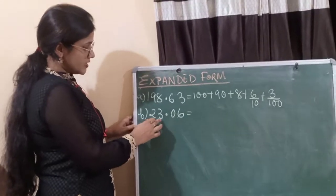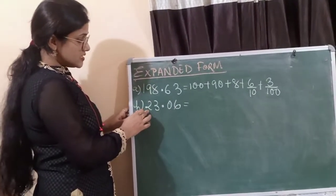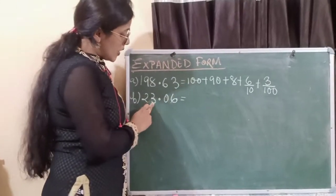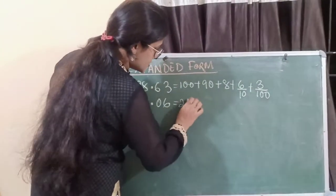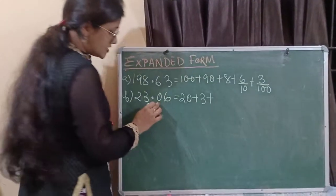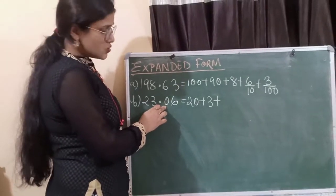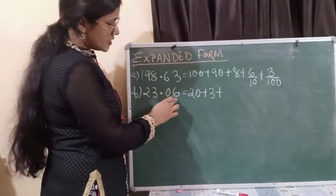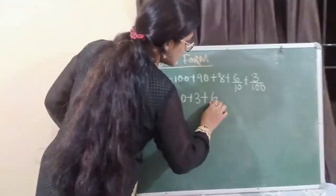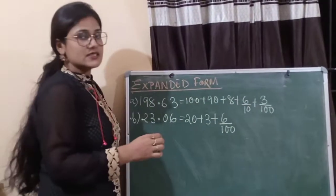Next number is 23.06. So 2 is in the 10s place and 3 is in the 1s place, so we will write it as 20 plus 3. As you can see, the number in the 10ths place is 0, so we do not write it. We will directly move to 6. So 6 can be written as 6 by 100 as it is in the 100ths place.